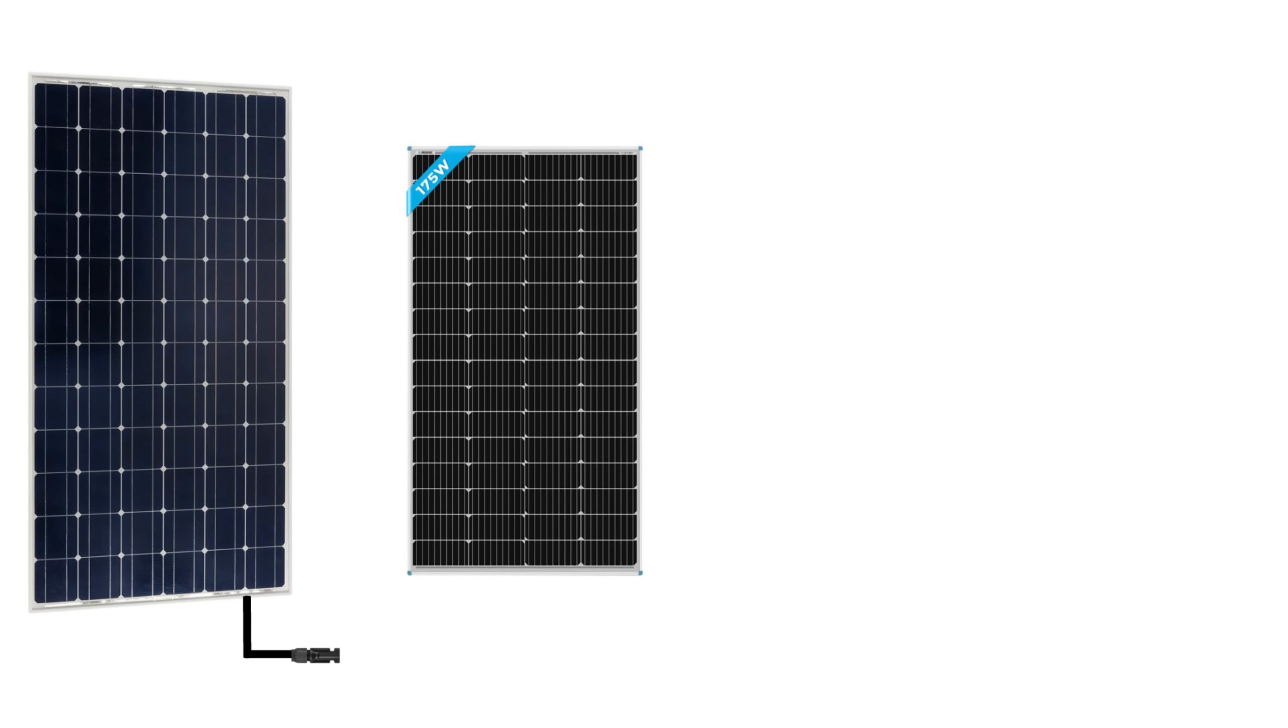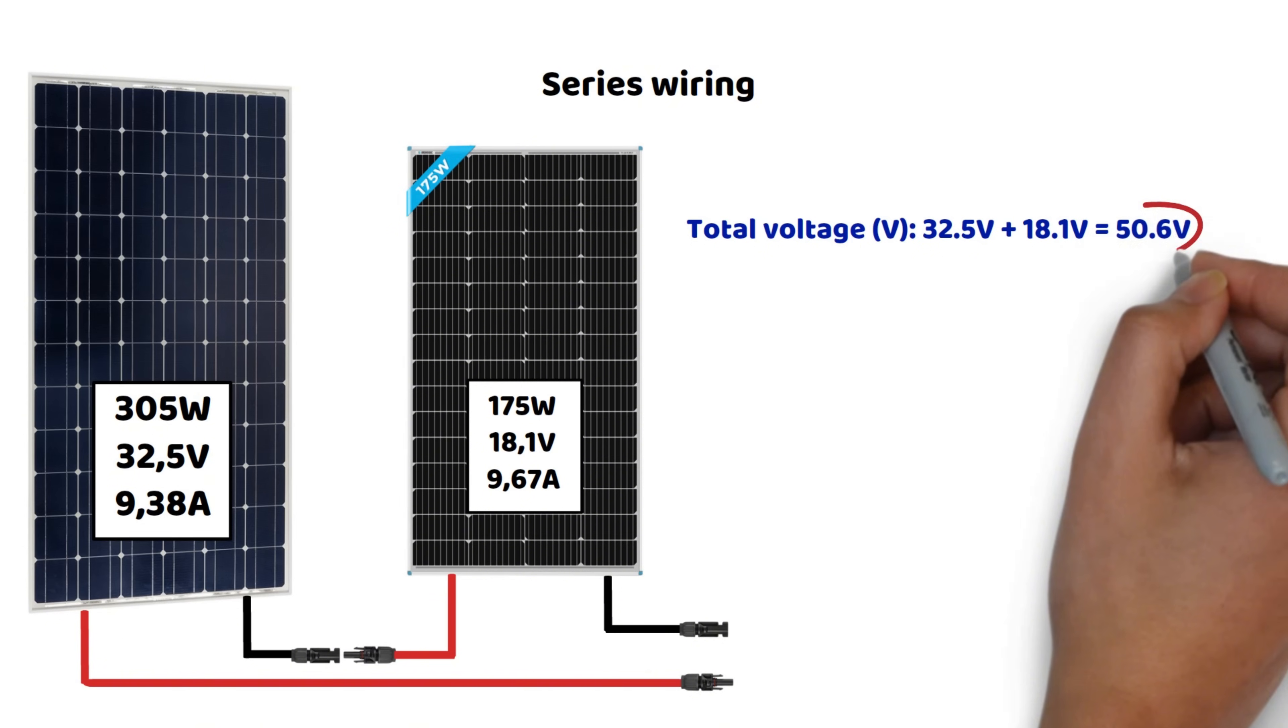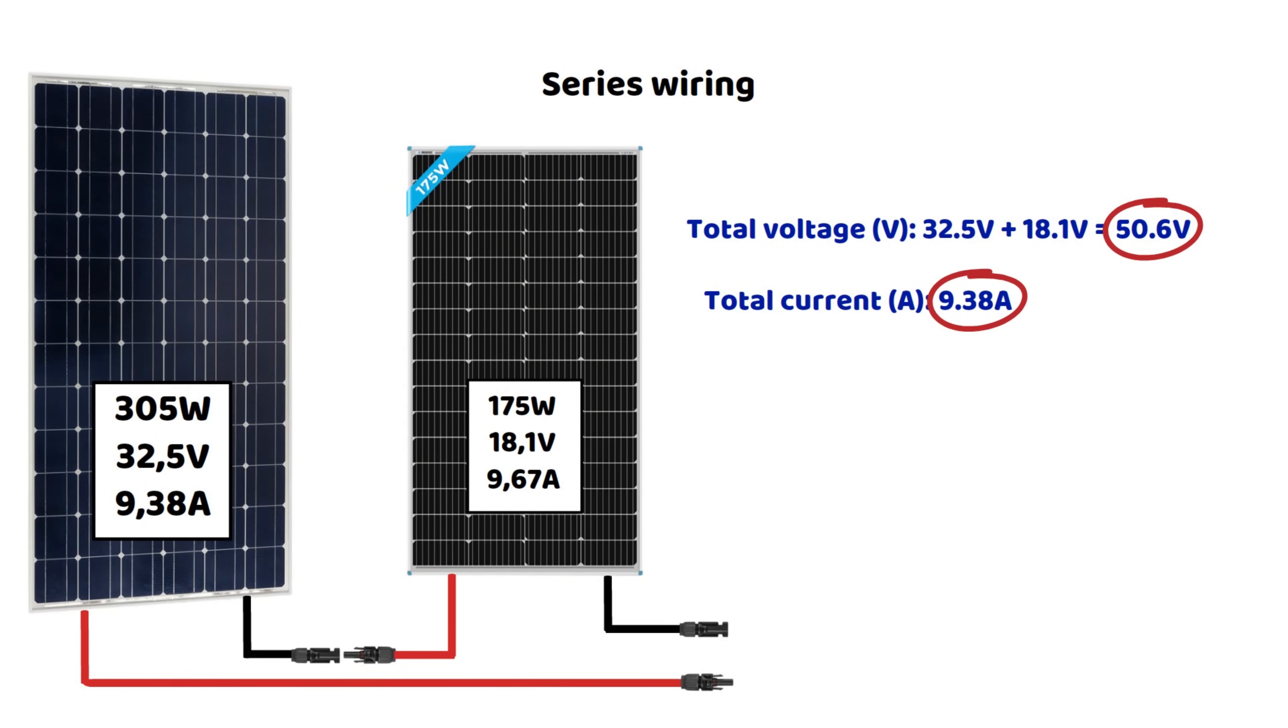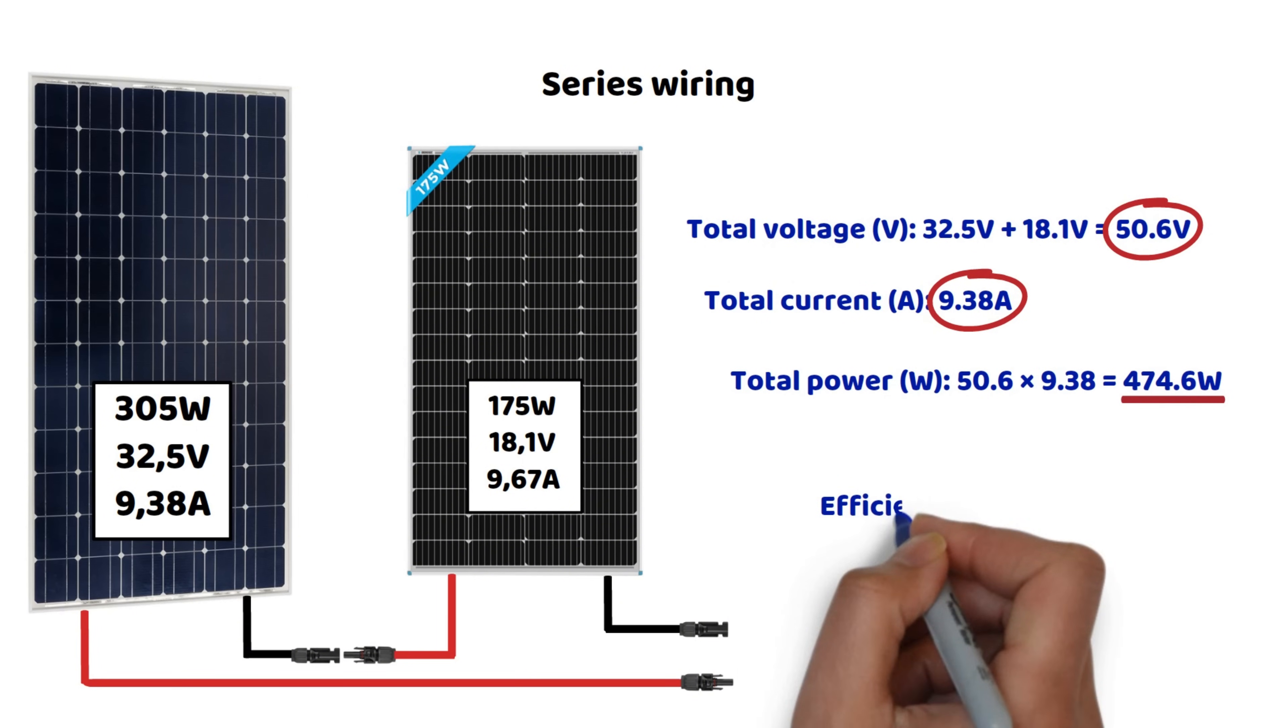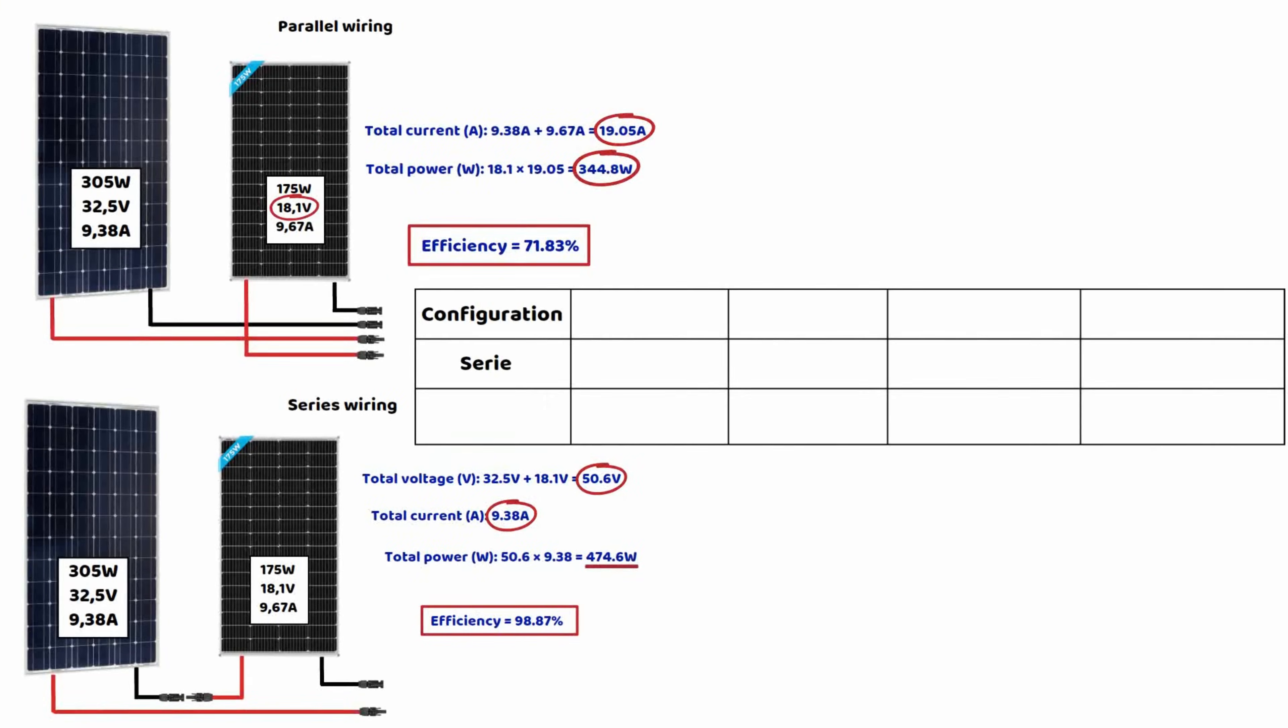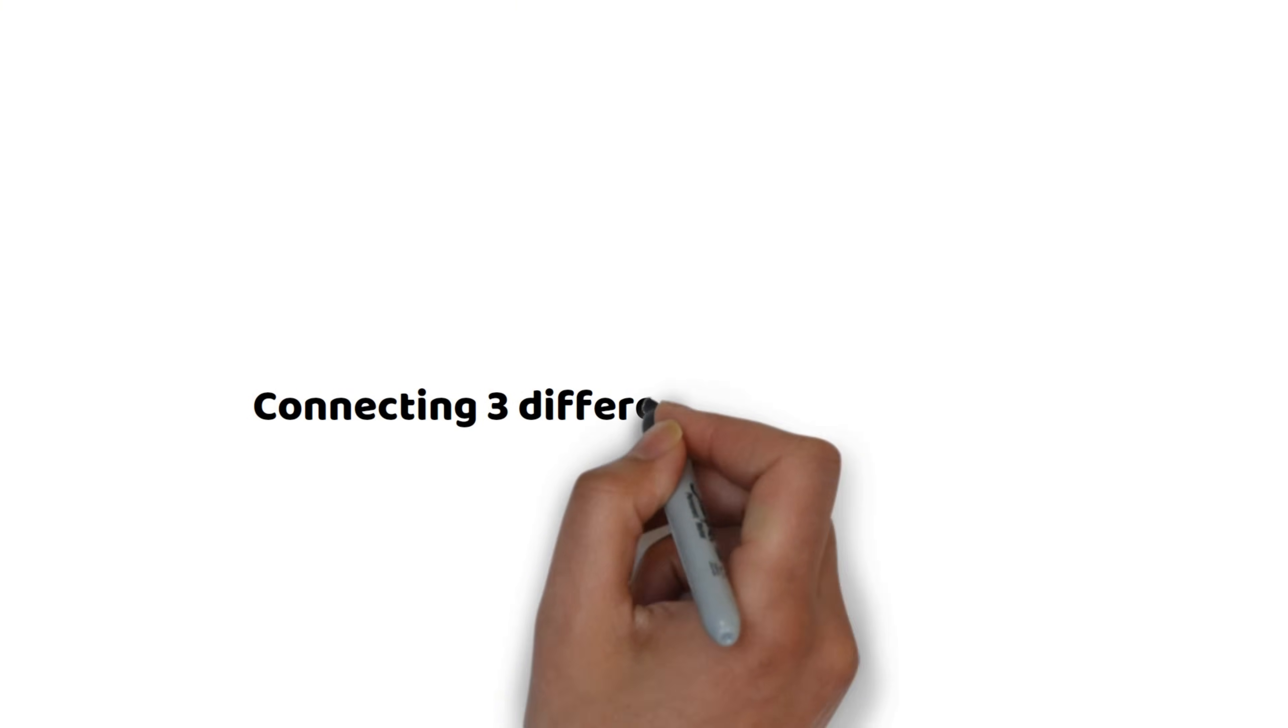In a series connection, the voltages add up, and the current is limited to the lowest of the two. Here, this gives us a voltage of 32.5 volts plus 18.1 volts equals 50.6 volts. Since the currents are quite close, 9.38 amps and 9.67 amps, we must use the lowest value, which is 9.38 amps. With these values, the total power is calculated as 50.6 volts multiplied by 9.38 amps, which gives us 474.6 watts. In this case, the efficiency compared to the theoretical total power is much better, as it reaches 98.87%. Here is a table to compare the two setups. Even though these are two different panels, their operating currents were very close, so the series connection resulted in minimal loss. In parallel, the difference in voltage severely limits the overall efficiency.